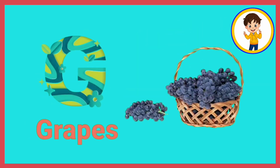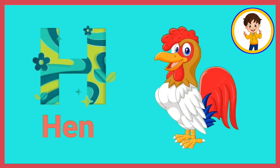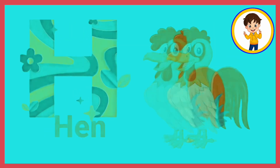G. G for grapes. Grapes means anggur. H. H for hen. Hen means murgi.